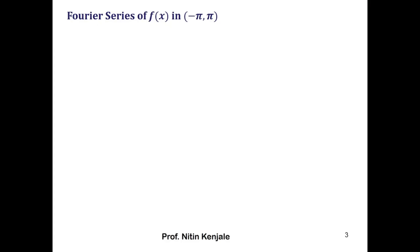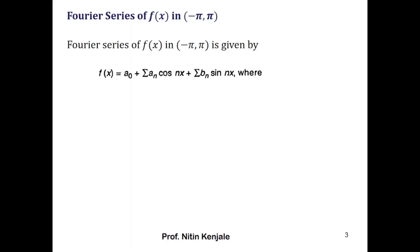According to my last video, the Fourier series of the function f(x) in the interval minus pi to pi can be given by f(x) equals a-naught plus summation of aₙ cos(nx) plus summation of bₙ sin(nx), where these summations run from n equals 1 to infinity.